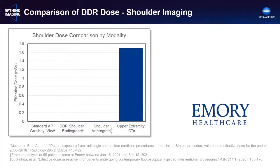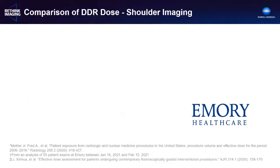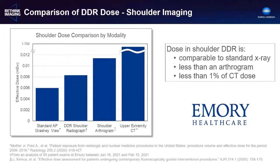As with all x-ray exams, dose is of critical importance. We analyzed the technique and incident air KERMA entrance dose for 55 patients receiving shoulder DDR at Emory Orthopedics and Spine Center. The effective dose was calculated and compared to reported values for conventional static radiography, shoulder arthrograms, and CT. The dose from a DDR acquisition is very low — comparable to a standard x-ray and much less than fluoroscopic arthrograms and CT. Relatively speaking, the effective dose of a DDR acquisition is about 25% higher than a conventional static exposure and almost 40% lower than an arthrogram.